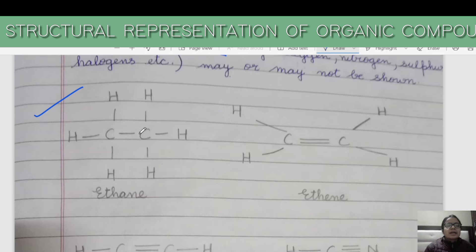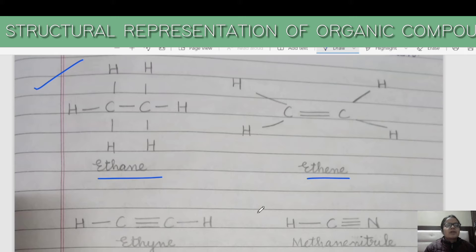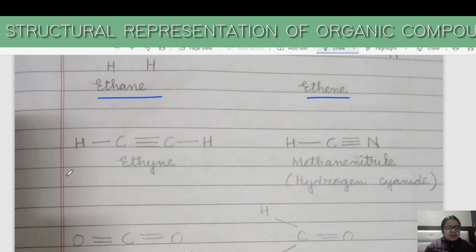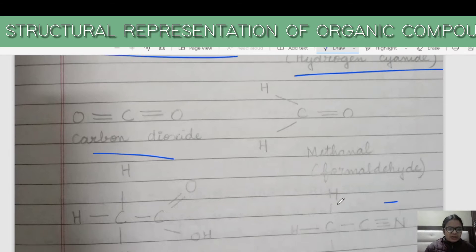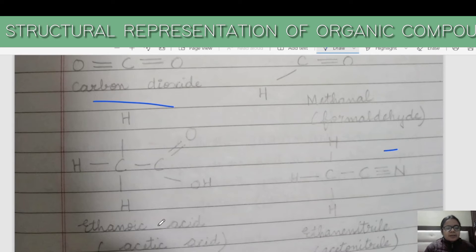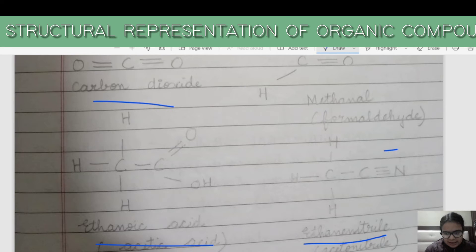In the complete structural formula, all bonds are shown. Examples include ethane, ethene — these are the complete structural formulas where we show the whole bonds and every atom is depicted. You can get this PDF in the Telegram channel called Praveen Cause World. This is ethanoic acid (acetic acid), and this is ethanenitrile.